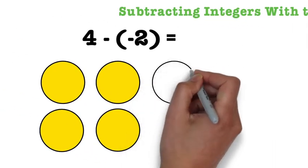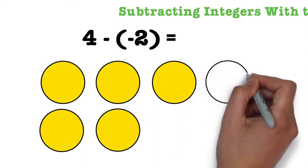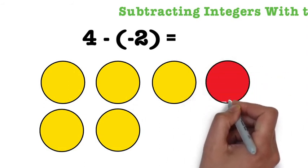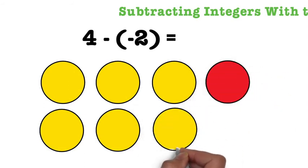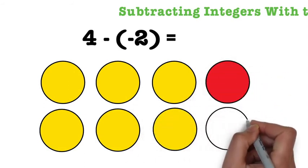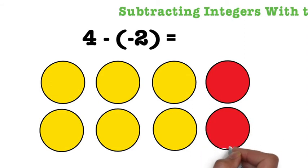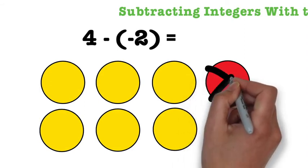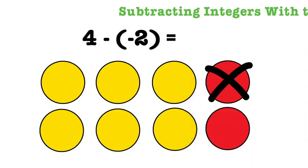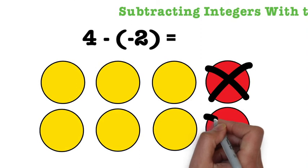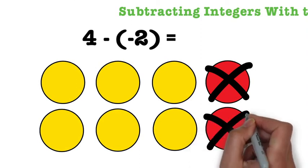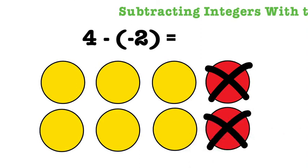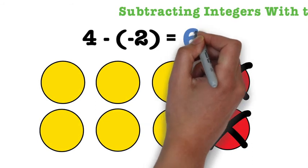A zero pair allows us to add counters to our problem without changing the value of what we already had. Since we are being asked to remove two negatives, we will need two zero pairs. Once we add the zero pairs, we will have two negatives that we can remove, and once we do that, we will be left with six positive counters, giving us an answer of 6.